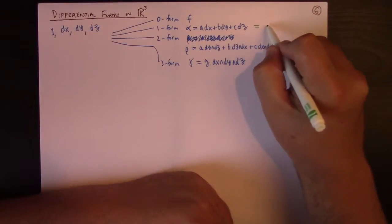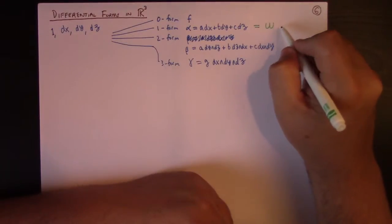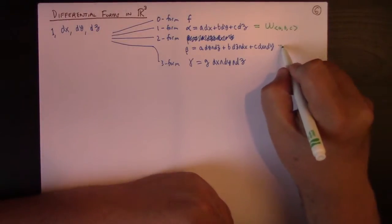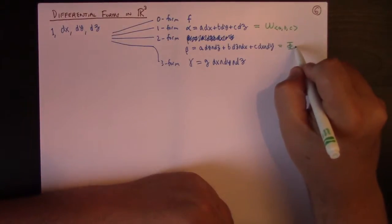So this is called the work form. This would be, I use omega, A, B, C like so. And this would be the flux form, C of A, B, C.